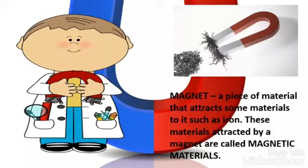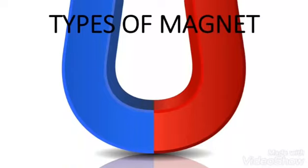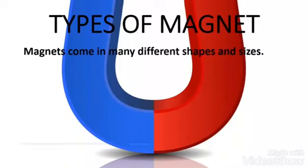A magnet is a piece of material that attracts some materials to it, such as iron. These materials attracted by a magnet are called magnetic materials. Magnets come in many different shapes and sizes.